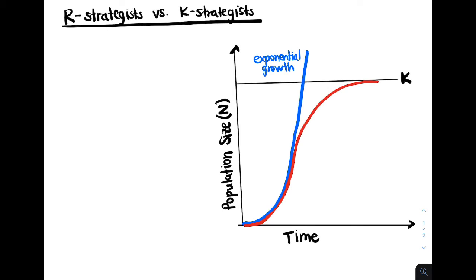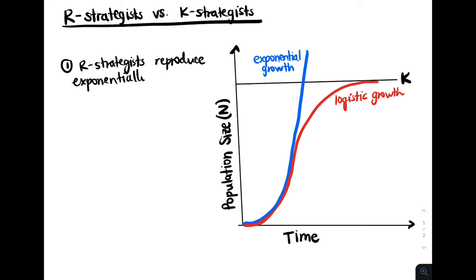And so this red curve represents logistic growth in which the carrying capacity does matter. So two key ideas to know are: number one, R strategists reproduce exponentially, or at the exponential part of the curve.